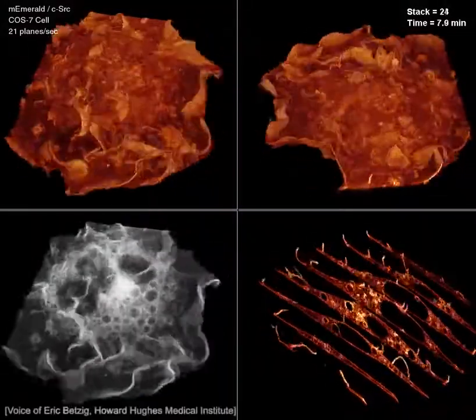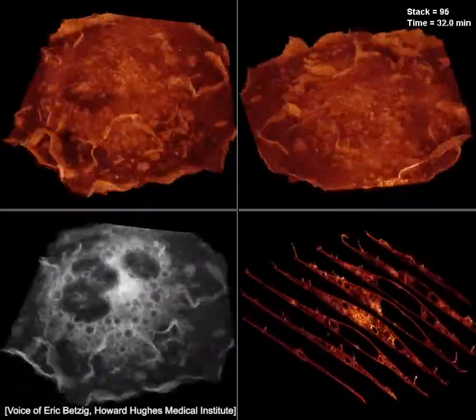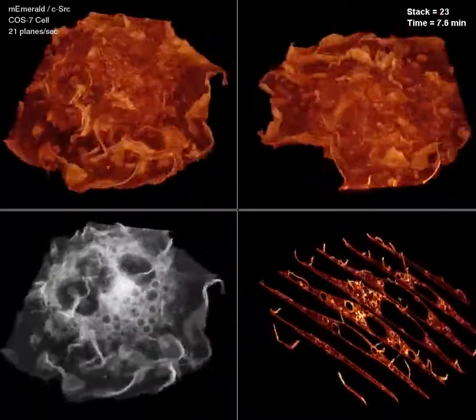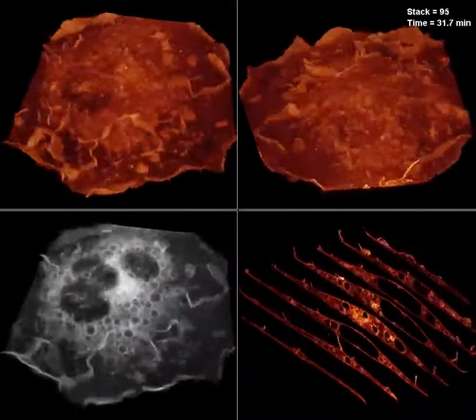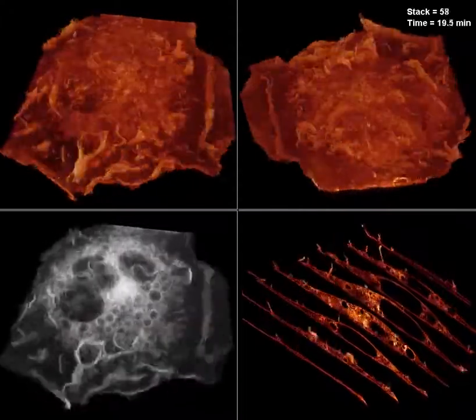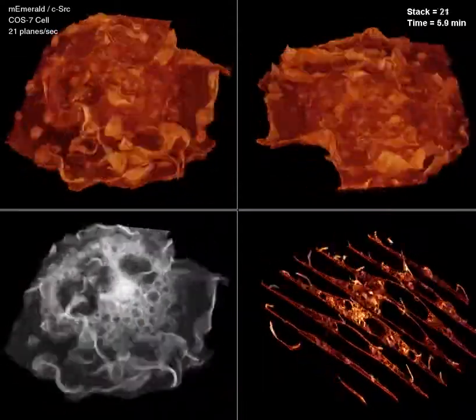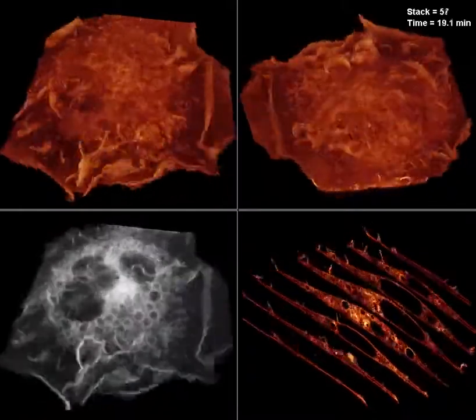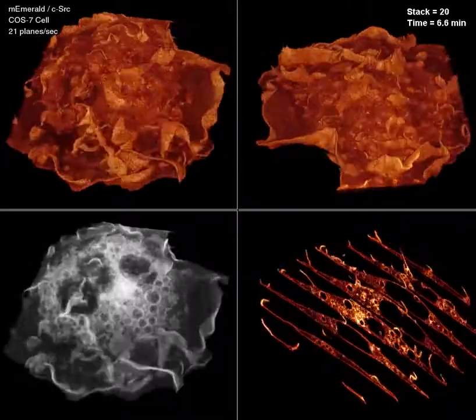The membrane ruffling example is a cell that has been transfected with CSARC, a cancer signaling protein, which promotes the membrane ruffles you see in the movie. The ruffles fold over on themselves and create a little bag that encapsulates extracellular fluid, forming vacuoles underneath.